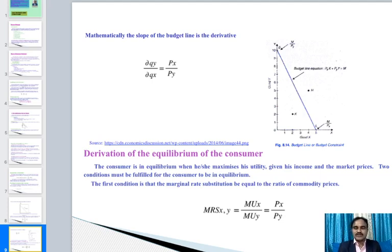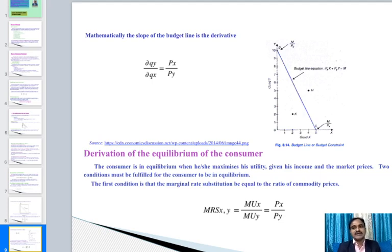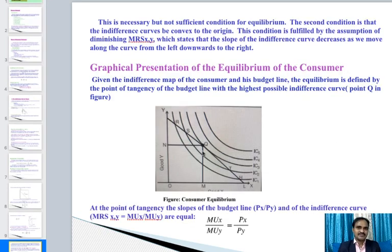Next is the derivation of consumer equilibrium. After knowing the indifference curve preferences and the budget line, we determine where the consumer achieves maximum satisfaction. Two conditions must be fulfilled: first, the marginal rate of substitution equals the ratio of commodity prices — MRSxy = MUx/MUy = Px/Py. This is necessary but not sufficient for equilibrium.